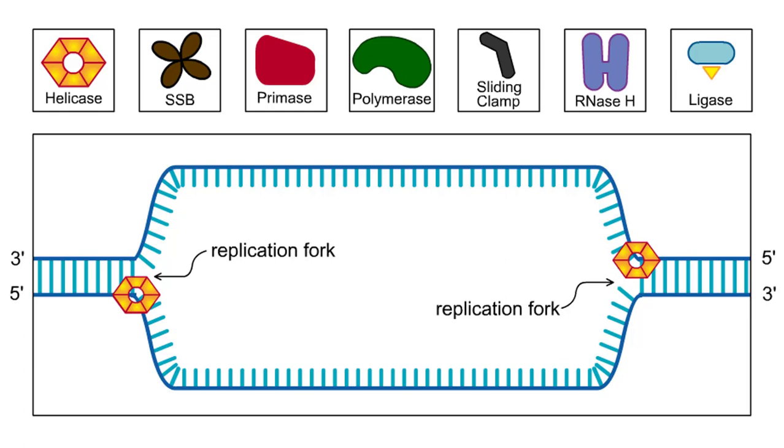Remember that the proteins involved in replication are clustered together and anchored in the cell. Thus, the replication proteins do not travel down the length of the DNA. Instead, the DNA helix is fed through a stationary replication factory, like film is fed through a projector.